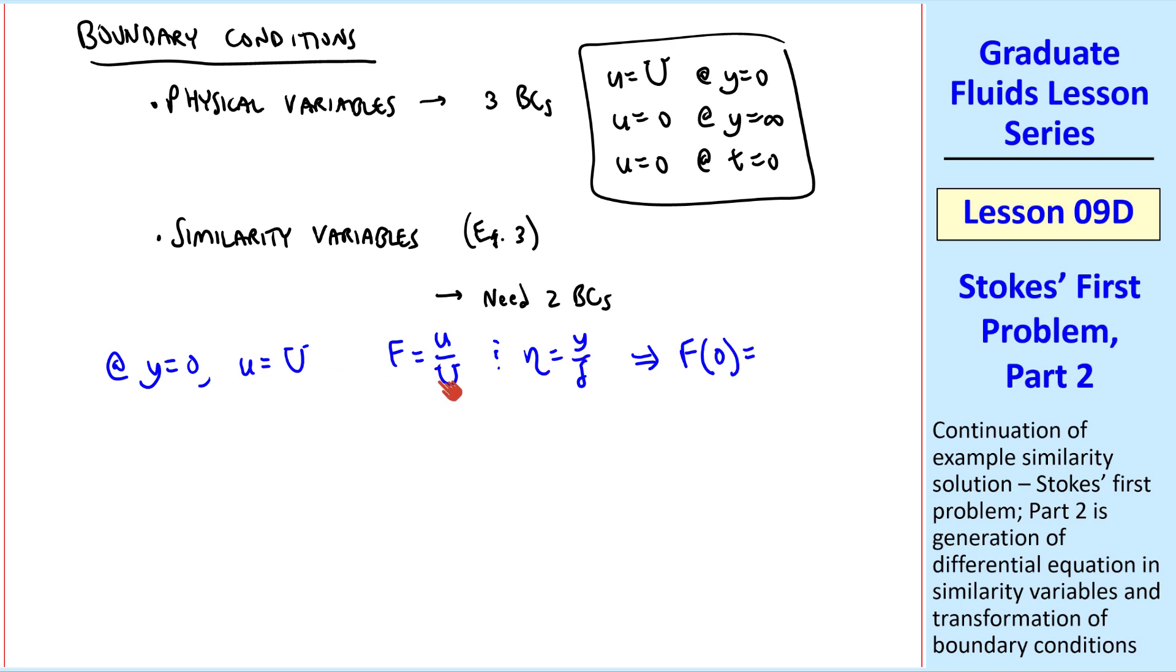equal U/U, or 1. At y = ∞, u = 0, and thus F(∞), since eta becomes infinity when y is infinity, is equal to 0, since u is 0. This is our second boundary condition, which is all we need, by the way, to solve the equation.